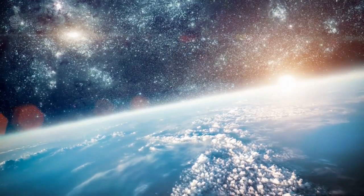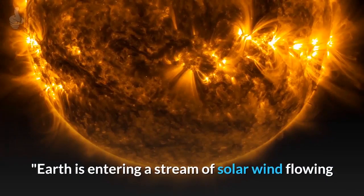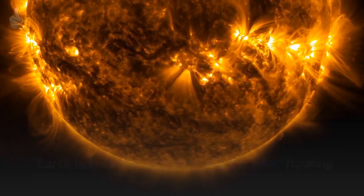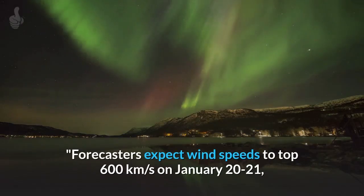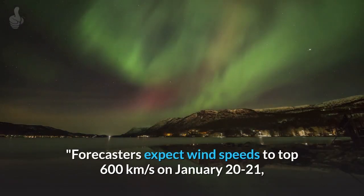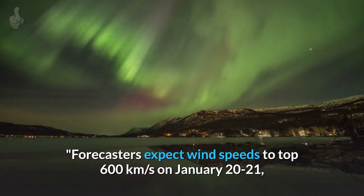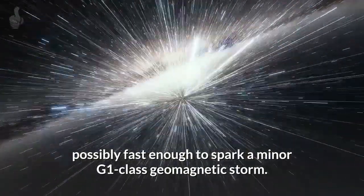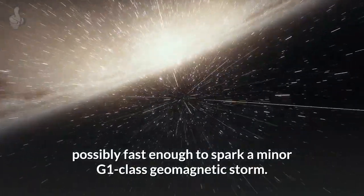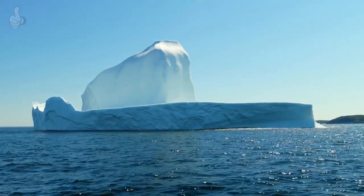Astronomy site Space Weather stated: Earth is entering a stream of solar wind flowing from a northern hole in the sun's atmosphere. Forecasters expect wind speeds to top 600 km per second on January 20-21, possibly fast enough to spark a minor G-1 class geomagnetic storm. Arctic auroras are likely.